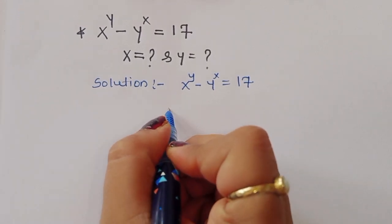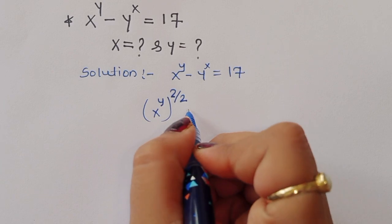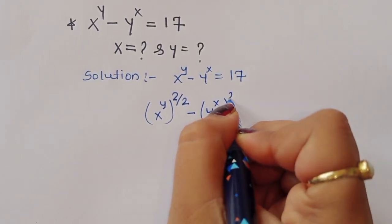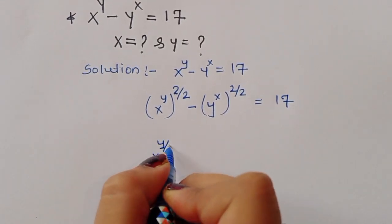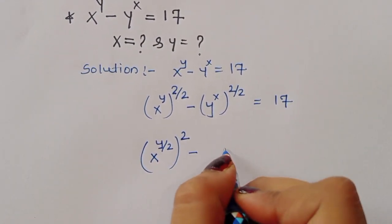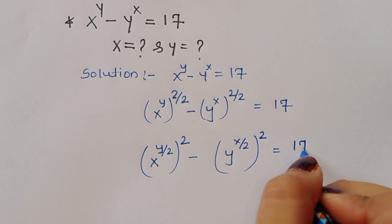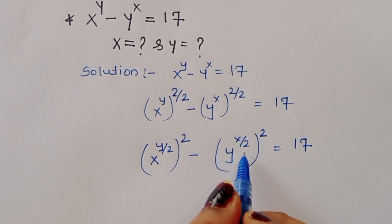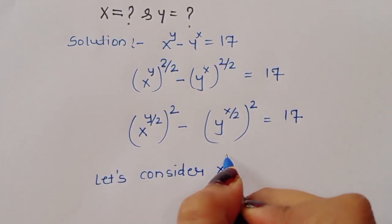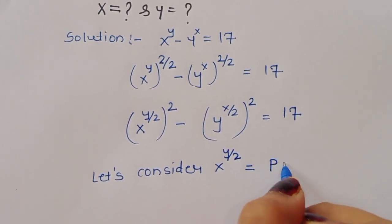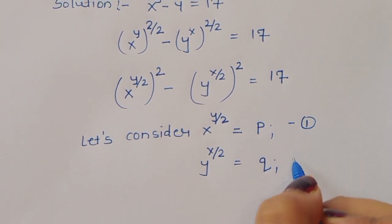We can rewrite x power y as x power y times 2 by 2, since 2 by 2 equals 1. So we write x power y by 2, whole squared, minus y power x by 2, whole squared, is equal to 17. Now let's consider x power y by 2 is equal to p — this is equation 1 — and y power x by 2 is equal to q — this is equation 2.